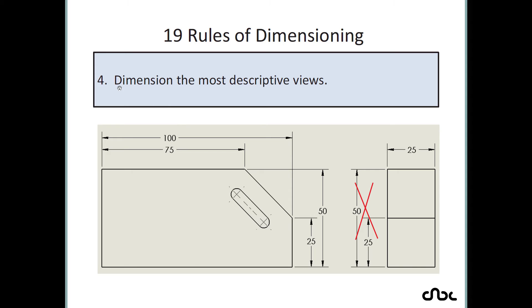Rule number 4: dimension the most descriptive views. When placing a dimension, check which view is more descriptive. For example, dimension 25 is more descriptive in one view — in another view there is just a line and you cannot understand what it represents. But in the descriptive view you can clearly see that the part is tapered. So always place dimensions on the most descriptive view.